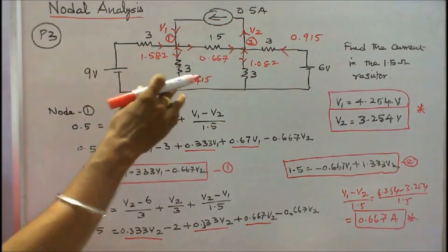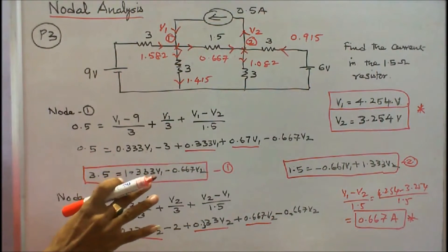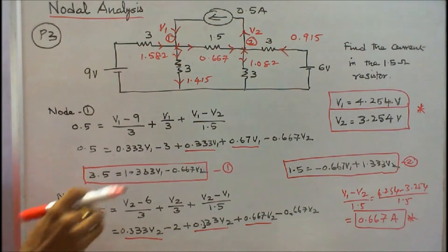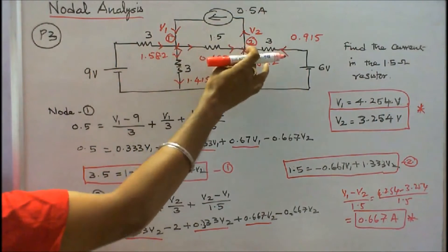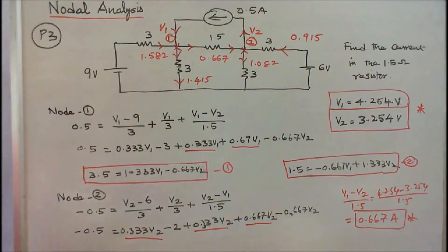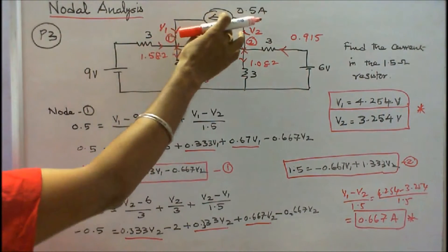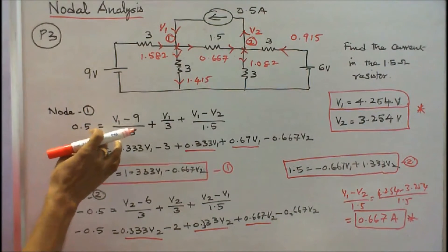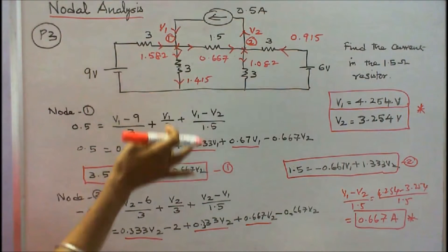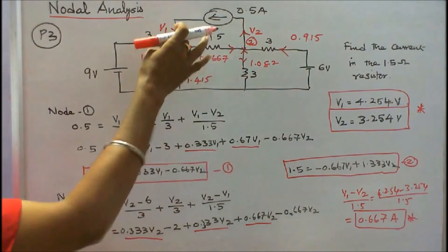Problem number 3. Five resistors, two voltage sources, and one current source are connected as shown in the figure. Find the current in the 1.5 ohm resistor. There are two nodes: node 1 with voltage V1, and node 2 with voltage V2. The voltage sources are 9 volts and 6 volts. Current towards node 1 is 0.5 amps.